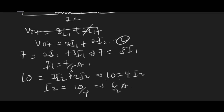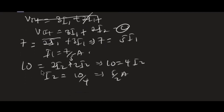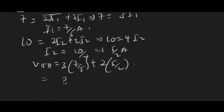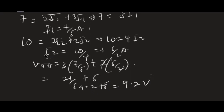Substituting into the VTH equation: VTH = 3·(7/5) + 2·(5/2) + 2·(5/2) = 21/5 + 5 = 4.2 + 5 = 9.2 volts.